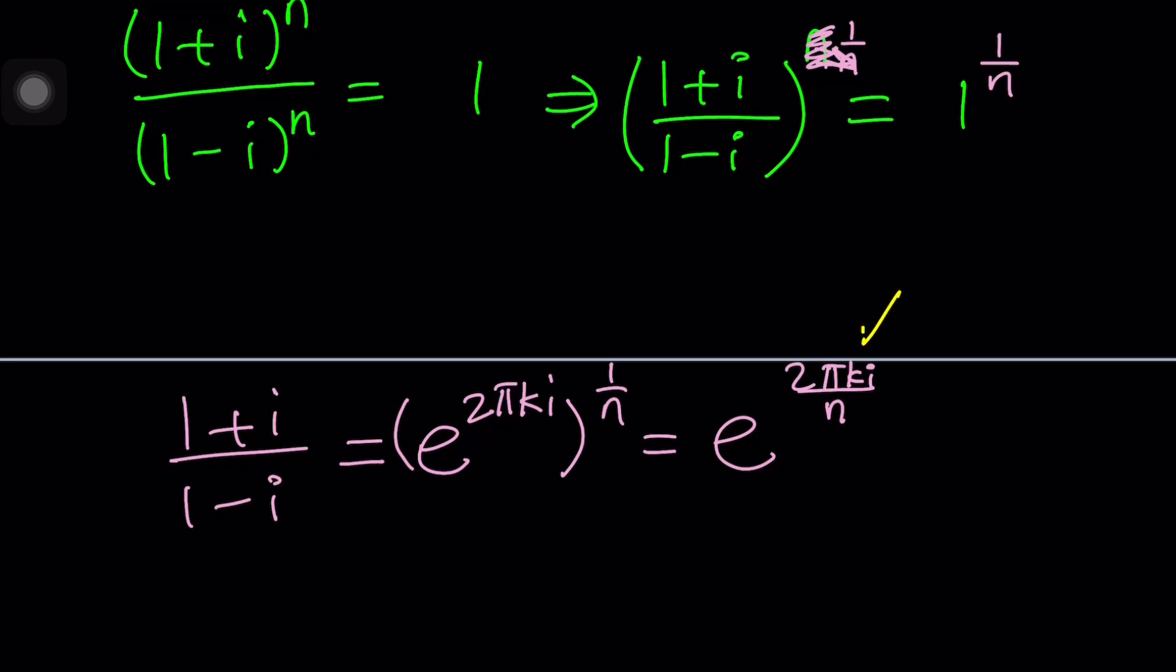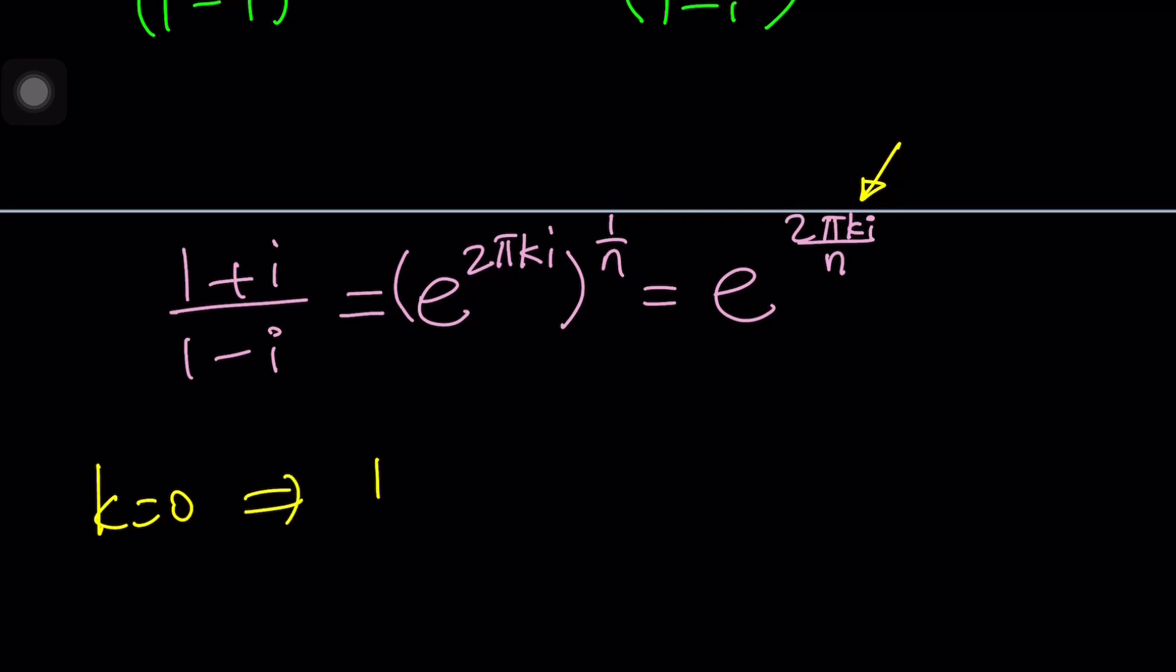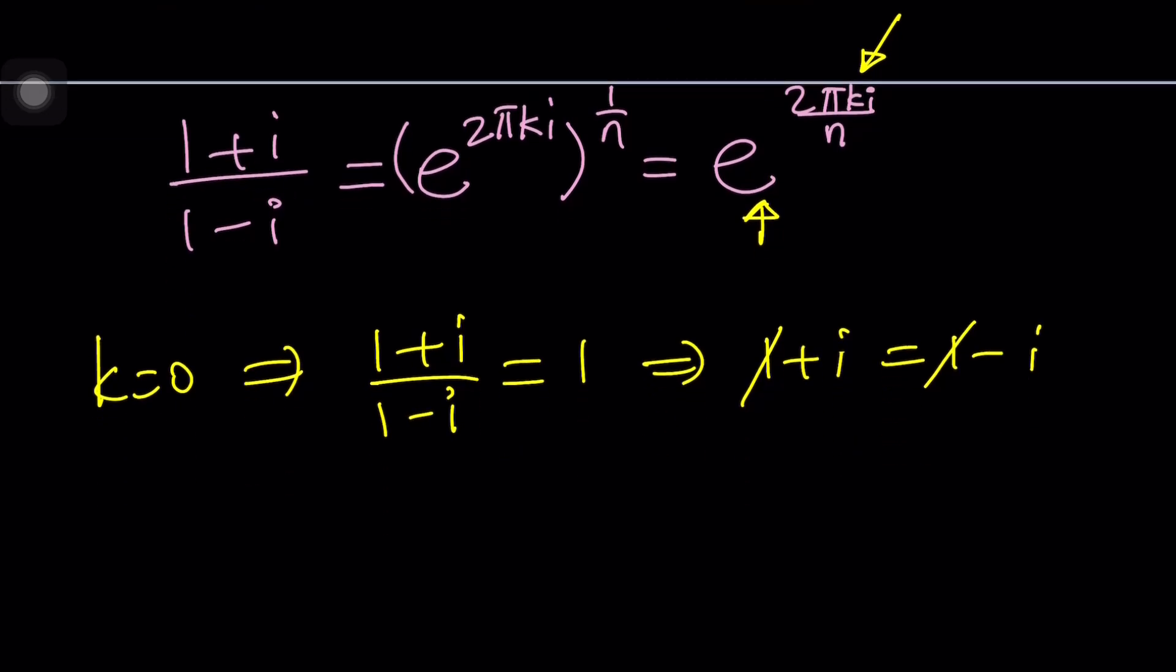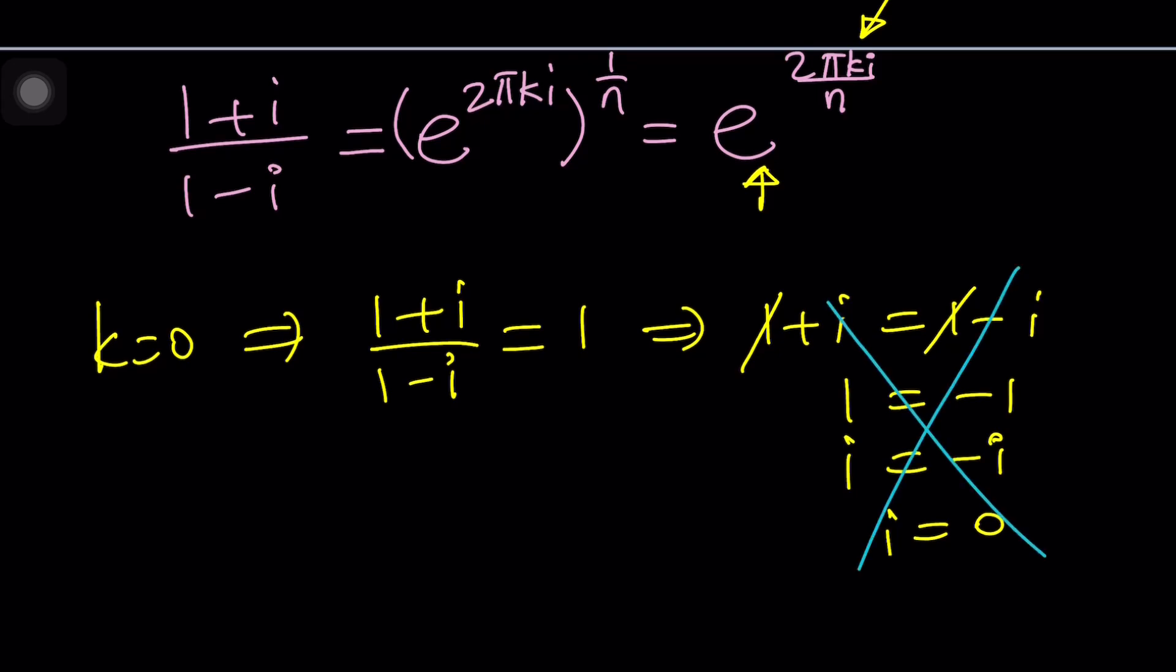Now I have a constant expression on the left-hand side, which is (1+i)/(1-i), and then I have the nth roots of unity on the right-hand side. Let's just look at some particular values of k. For example, if k equals 0, then (1+i)/(1-i) is going to equal e^(0/n), which equals 1. From here, we get 1+i equals 1-i. 1 cancels out, i equals negative i, or 2i equals 0, i equals 0. That's not true, obviously. This is all false. No solution from here. k equals 0 is not going to work.